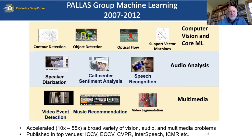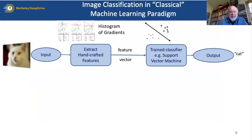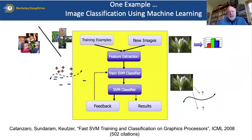My research group worked for a number of years on applying and accelerating machine learning algorithms across a variety of problems in computer vision, core machine learning, audio analysis, and multimedia. We were fairly successful, publishing across the top venues for those areas. For image classification, we used a battery of different handcrafted features applied to input images, then a trained classifier such as a support vector machine. We published that in an article on fast SVM training and classification on graphics processors.